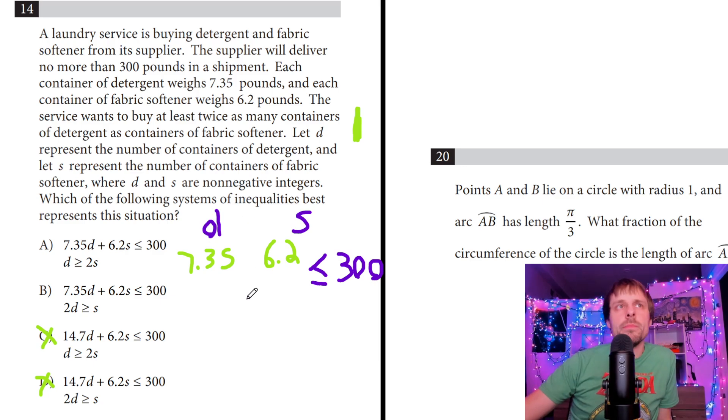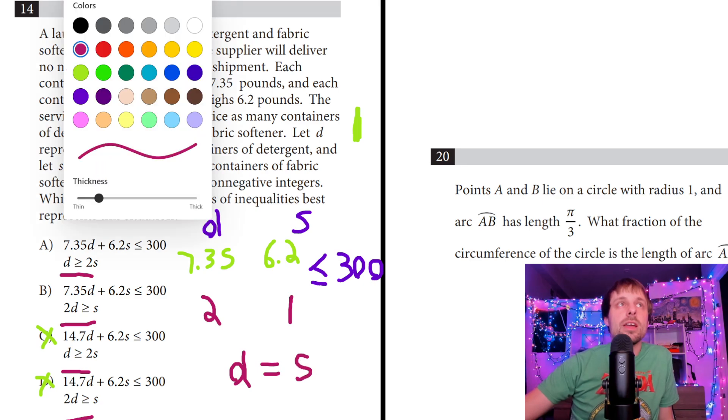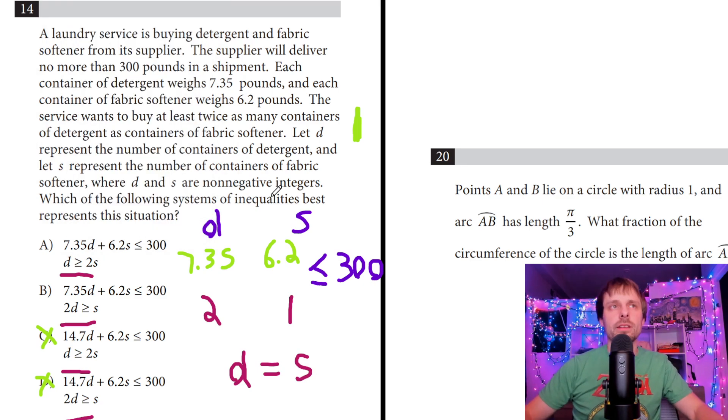They say they want to buy at least twice as many containers of detergent as fabric softeners. So to not get confused when making this equation, let's put a two for detergent and one for fabric softener, at least twice as many of detergent as fabric softener. But how do we make that equation? Cause I'm looking at this part now. They're directly comparing the two. So to compare these two, I start with detergent equals softener. One of them is going to get a two and one of them is going to get a one.